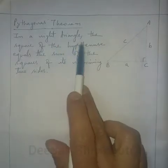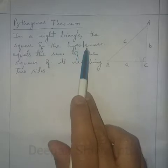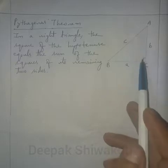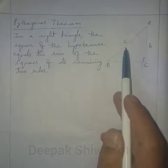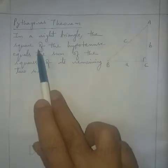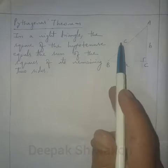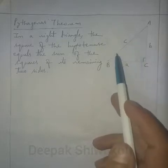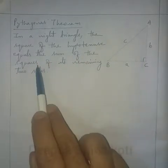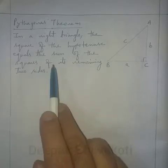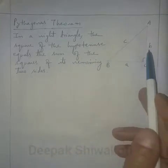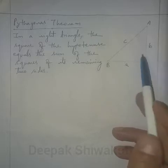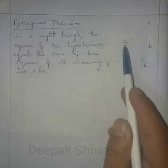In a right triangle, the square of the hypotenuse — hypotenuse is the side opposite to the 90 degree angle — equals the sum of the squares of its remaining two sides. So the square of these two sides, when added together, equals the square of the hypotenuse side.